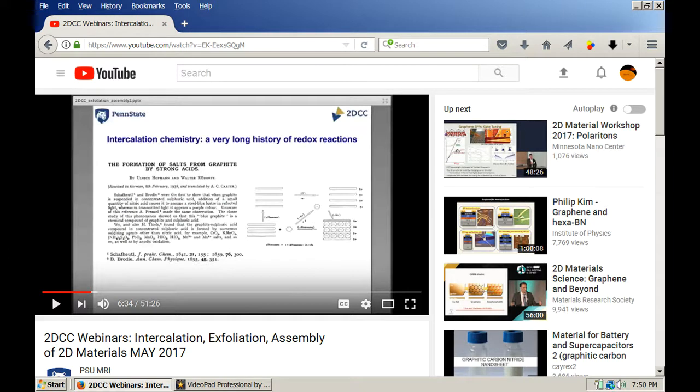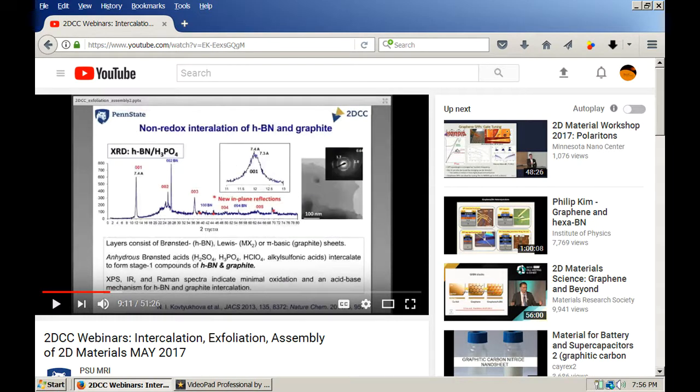In this slide here, Thomas is making the point that intercalation has a long history of using strong acids in redox reactions. The point is that the strong acids damage the graphene in the process of splitting the graphite apart.